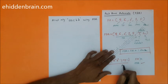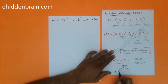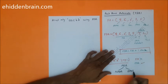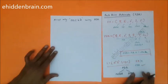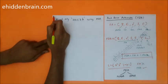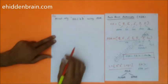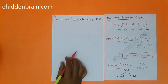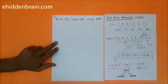Pushdown automata are further classified into two parts: non-deterministic pushdown automata (NPDA) and deterministic pushdown automata (DPDA). The question is simple: accept only 'aacbb' using pushdown automata.